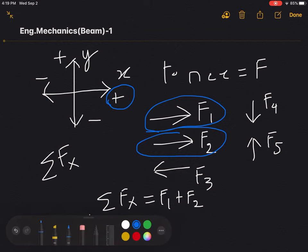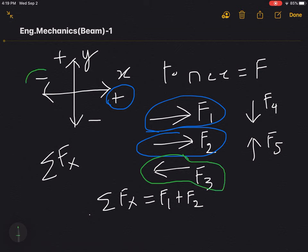And then we have the F3 force that is moving towards the left side. That would mean it's a negative force. So we'll write minus F3. So this would be our summation Fx for these forces.